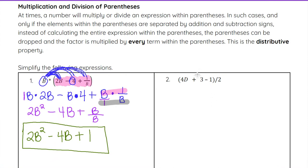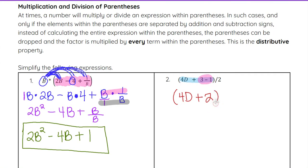Now looking at number 2, we have a similar concept, except inside the parentheses we can do some simplifying first. We have 4d plus 3 minus 1 — we can combine 3 minus 1 because they are both constants, numbers without variables. So we leave 4d plus 3 minus 1; 3 minus 1 gives us 2. We can't combine 4d and 3 because one has a variable and one doesn't, so we just get 4d plus 2, divided by 2.